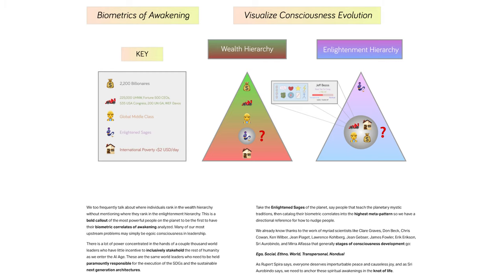Take the enlightened sages of the planet. Say people that teach the planetary mystic traditions. Then catalog their biometric correlates into the highest meta-pattern so we have a directional reference for how to nudge people.